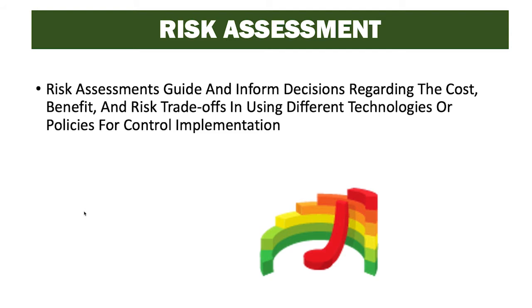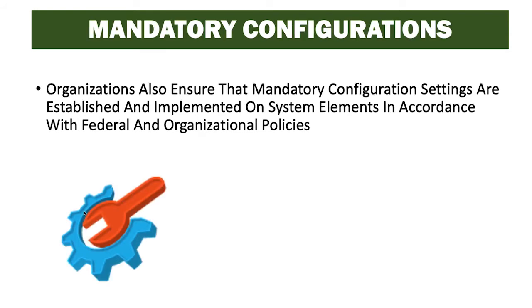The risk assessment determines the value of implementing a control, as well as the risk and value of not implementing or only partially implementing a control. Organizations also ensure that mandatory configuration settings are established and implemented on system elements in accordance with federal and organizational policies. For example, if our organization says passwords must be 12 characters long, that's a mandatory configuration setting we need to put in place, along with other requirements established by our organization, federal law, or other applicable requirements.